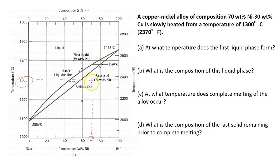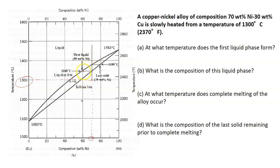This alloy is slowly heated from this temperature. If you look at this starting point, it is 100% solid. The question is: at what temperature does the first liquid phase form? You know that if you want to find where the liquid phase forms, it has to cross the liquidus line. The liquidus line is the boundary line which separates the solid and the liquid.